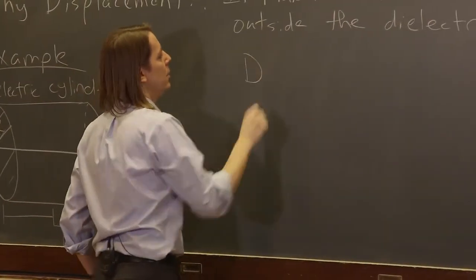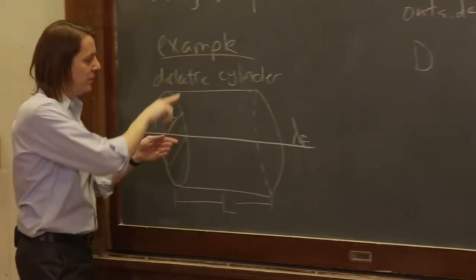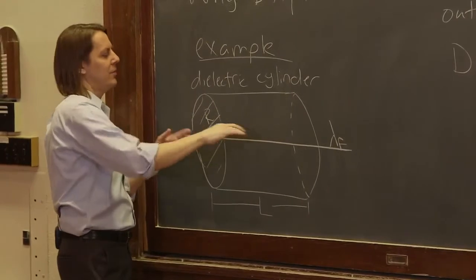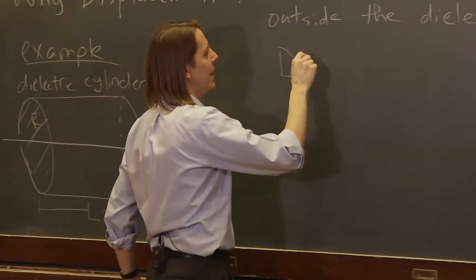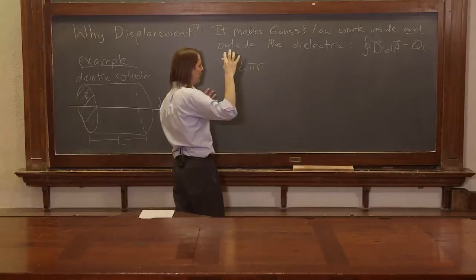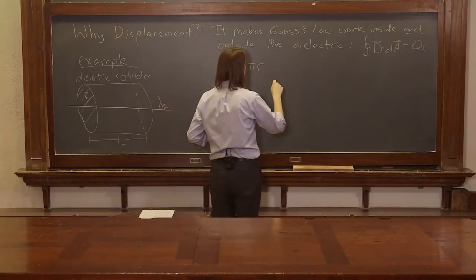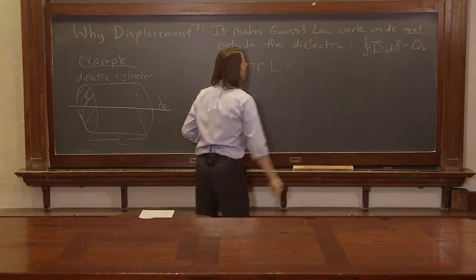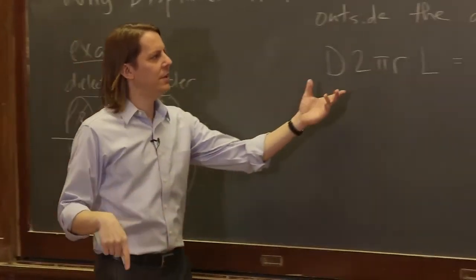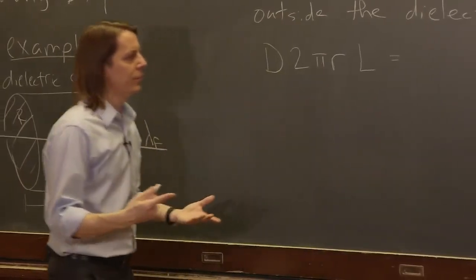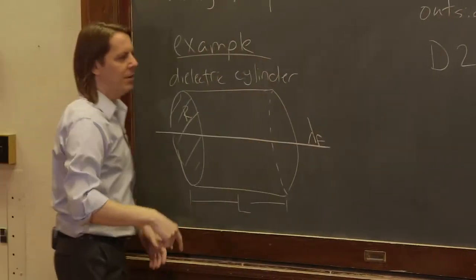It would be D. We know we have symmetry, so as long as we're on a cylinder that has the same axis as the dielectric cylinder, D is going to be constant. The circumference is 2π little r, because we have a variable-sized Gaussian cylinder, times L. What does that equal? That's the left side - the integral of D dot dA. The right side is just the free charge, which is lambda F times L.